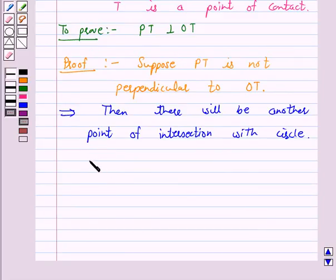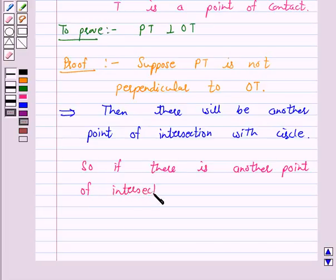So if there is another point of intersection with the circle, then PT is not a tangent to the circle.